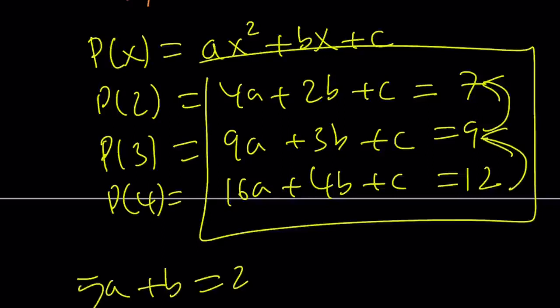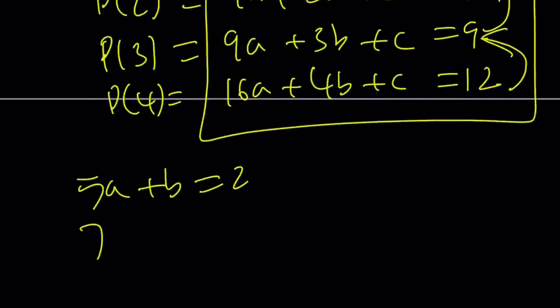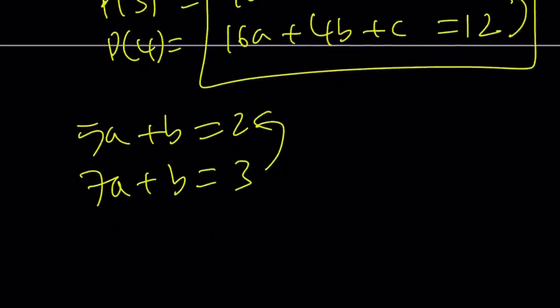If you subtract this way, c cancels out. You're going to end up with 7a plus b is equal to 3. And then from here, if you subtract this way, b is going to cancel out. And you're going to end up with 2a equals 1, which implies a equals 1 half.